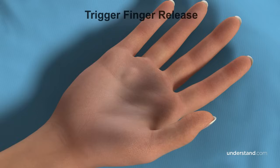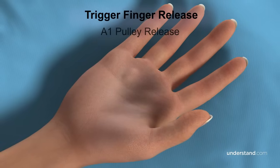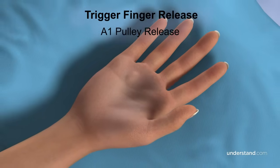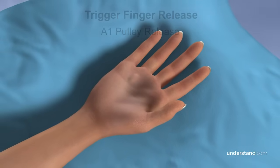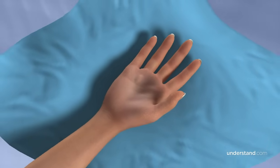Trigger finger release surgery, also known as an A1 pulley release, may be performed at a hospital, surgery center, or possibly in your surgeon's office. It's typically an outpatient procedure, so you will be allowed home after your surgery.